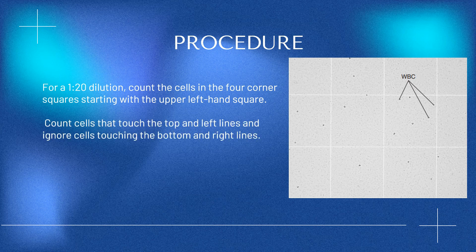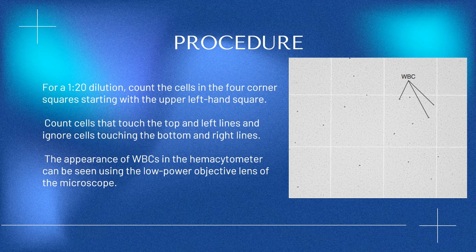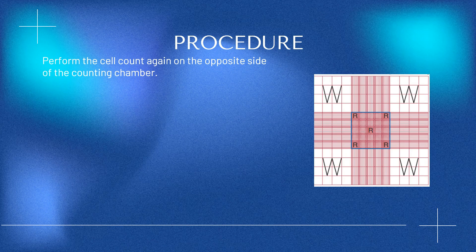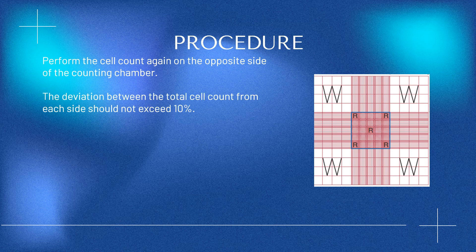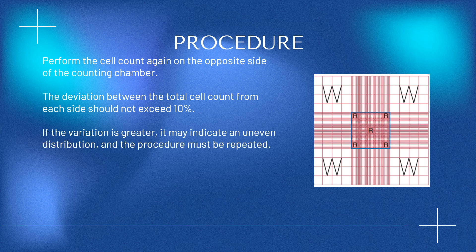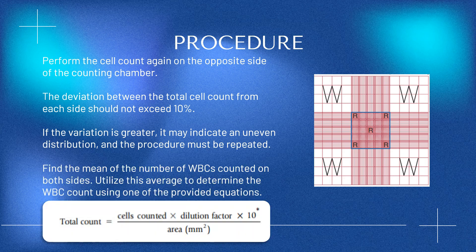Count cells that touch the top and left lines and ignore cells touching the bottom and right lines. The appearance of WBCs in the hemocytometer can be seen using the low-power objective lens. Perform the cell count again on the opposite side of the counting chamber; the deviation between totals from each side should not exceed 10%. If variation is greater, it may indicate uneven distribution and the procedure must be repeated. Find the mean of WBCs counted on both sides and use this average to determine the WBC count using the provided equations.